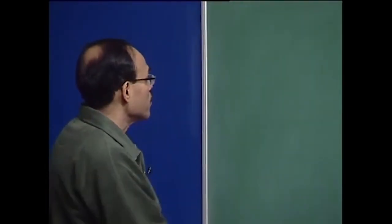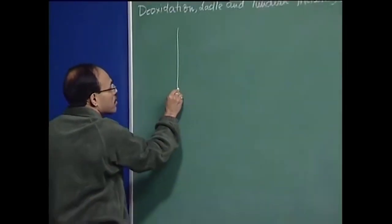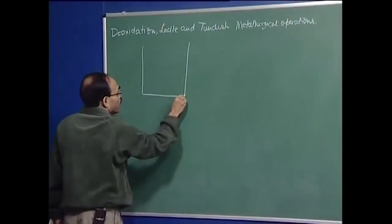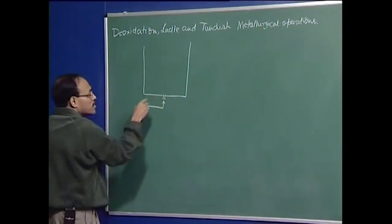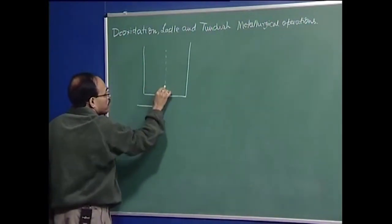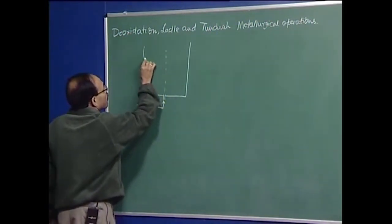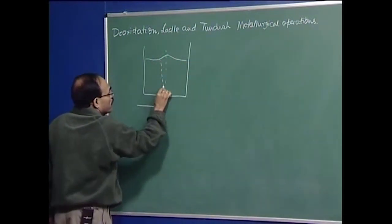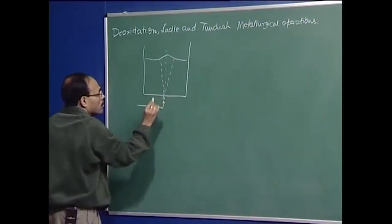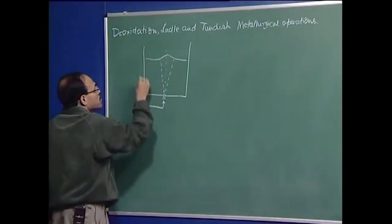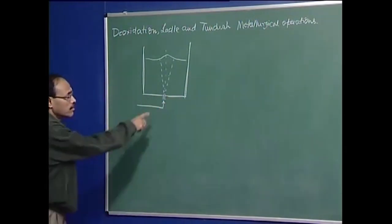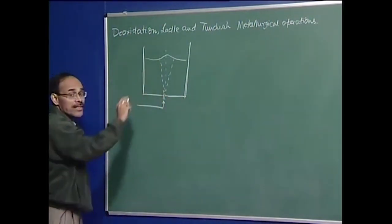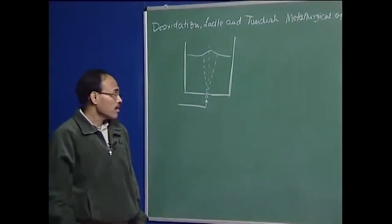Let me now give you a picture of gas injection — a physical picture of gas injection through a schematic of an axisymmetric injection. I have placed the nozzle at the center line; this is the plume boundary, this is the axis, and this represents the wall of the ladle. The nozzle is placed at the center line along the axis of symmetry. That is why it is an axisymmetric gas injection.